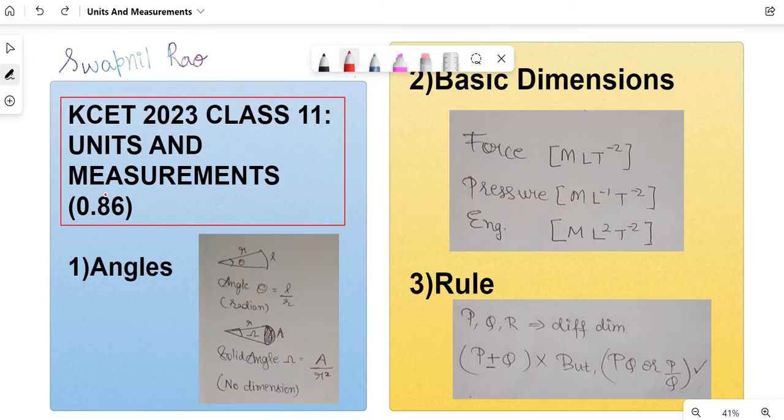As you can see, this chapter has a weightage of 0.86, which means 0.86 questions have come every year. There have been years where they have not asked one question at all from this. You can check the books from my orientation session to get a better understanding of the mark distribution. If you are watching this before the orientation session, click the link in the description to understand how to approach these classes.